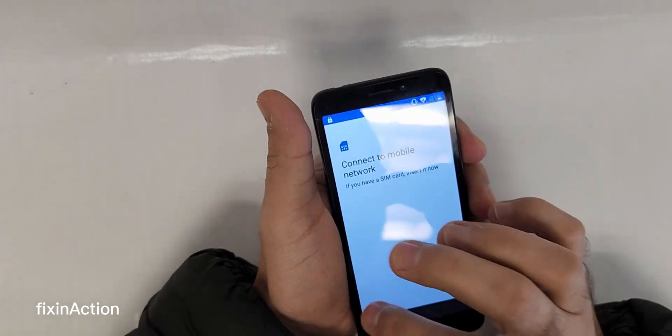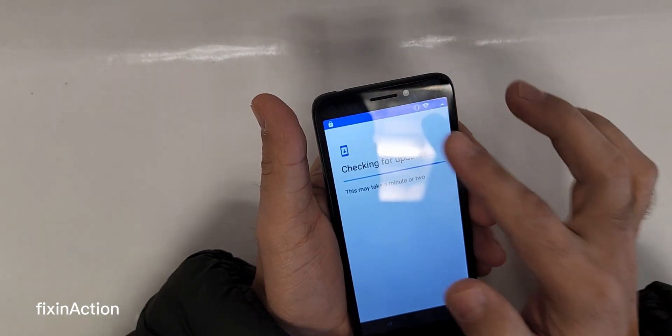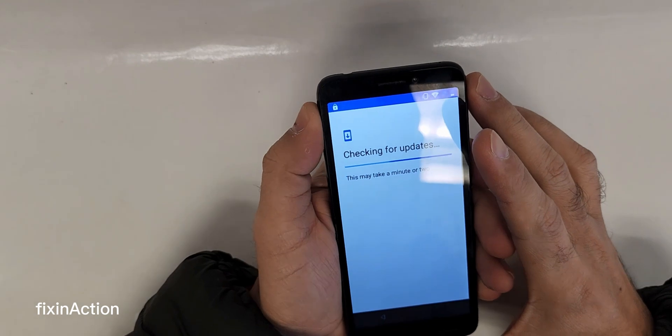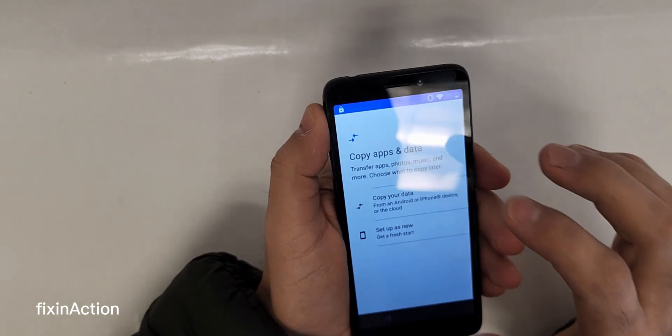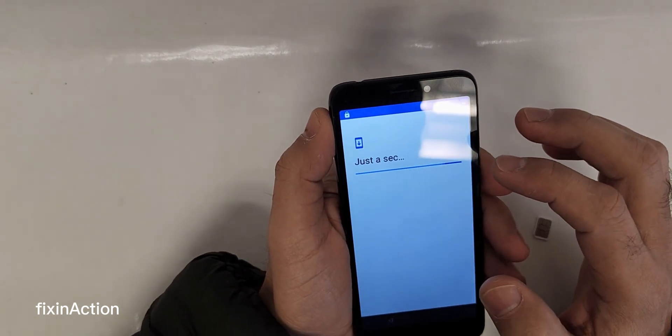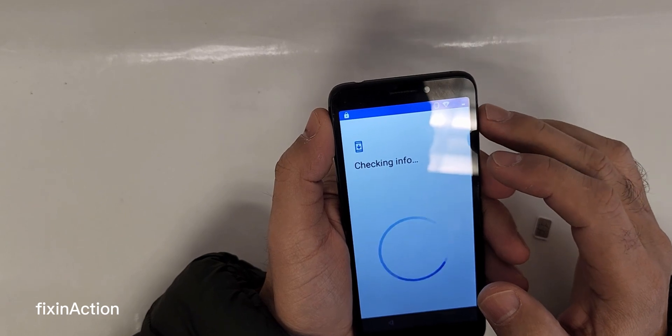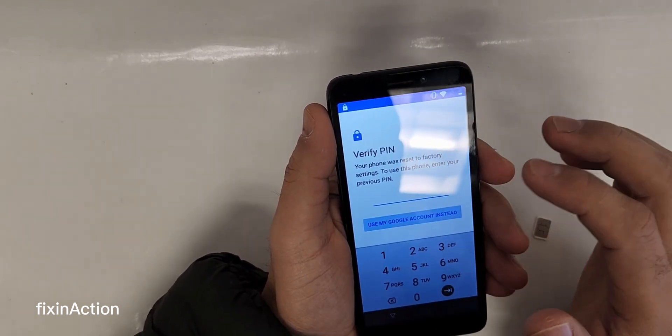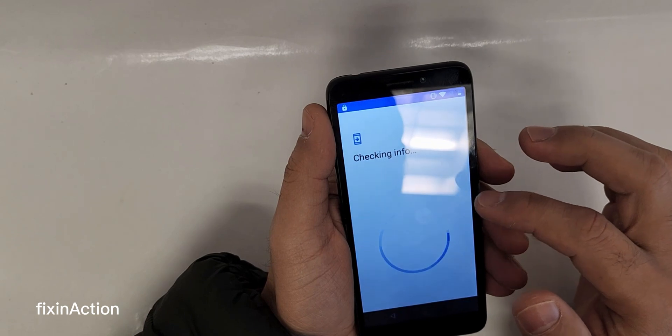As you can see, I have already connected to WiFi or internet connection just to make sure we still have a Google account on this device. As you can see, we don't know the PIN and we don't know the Google account.